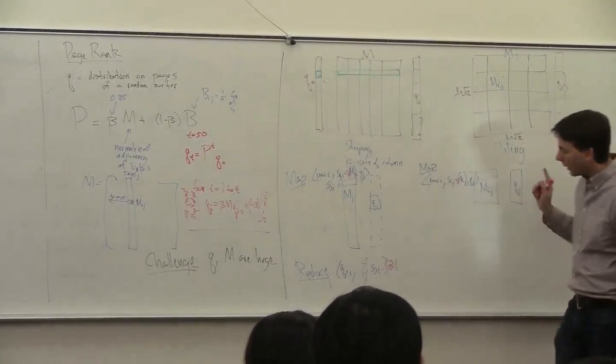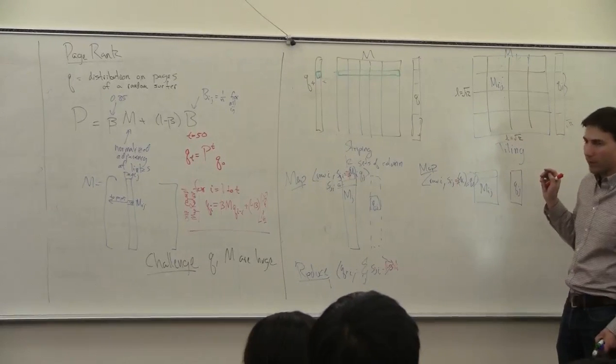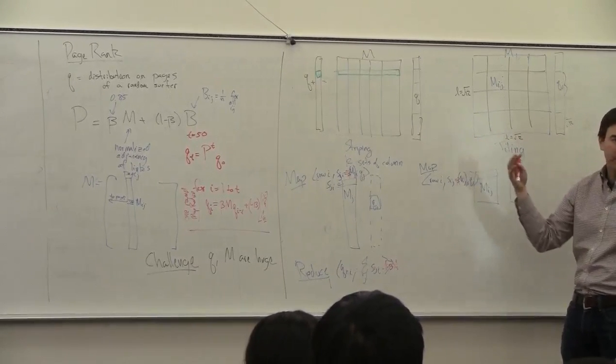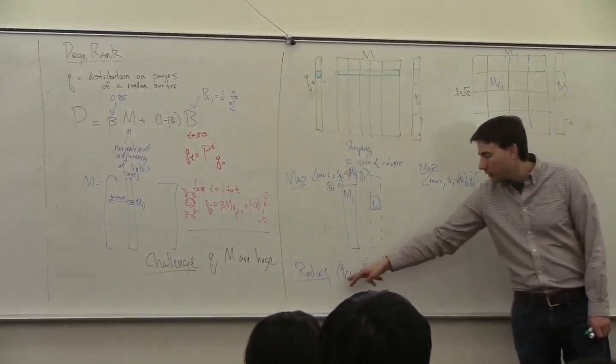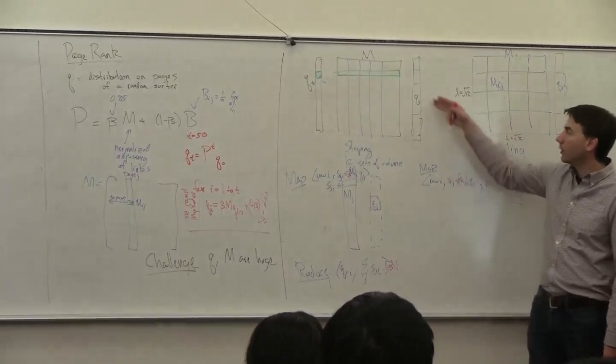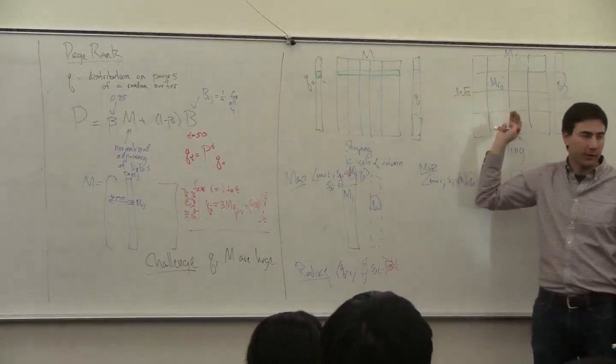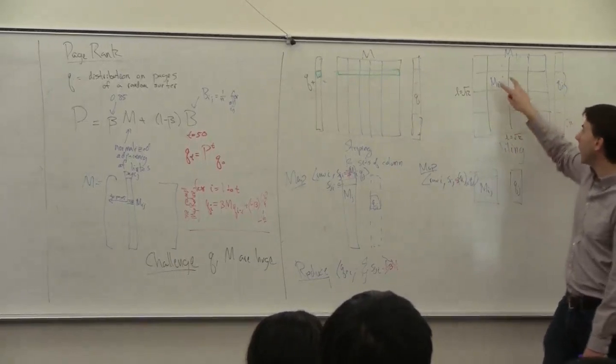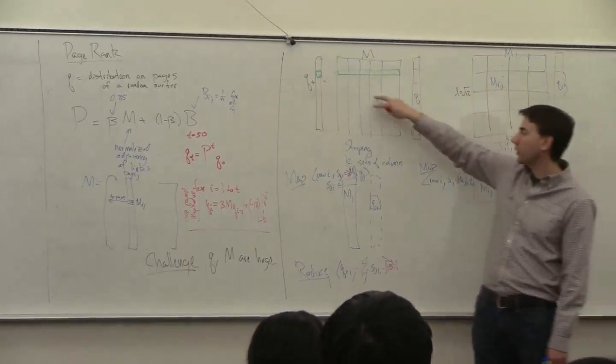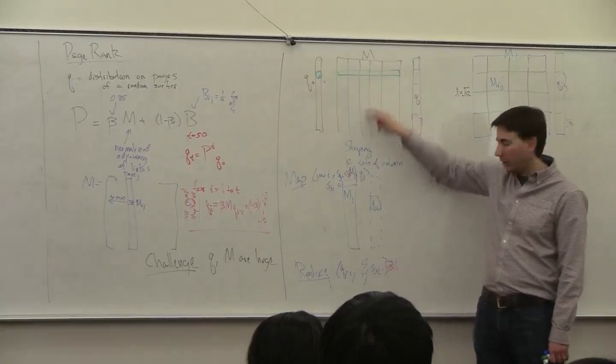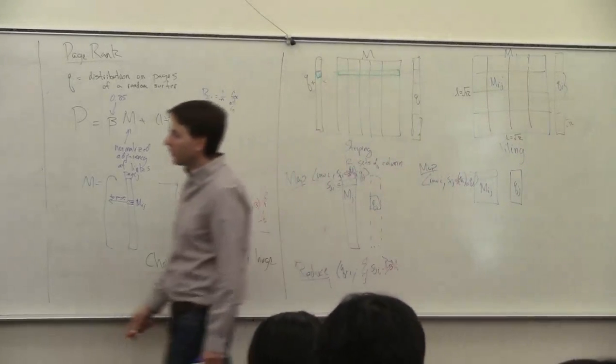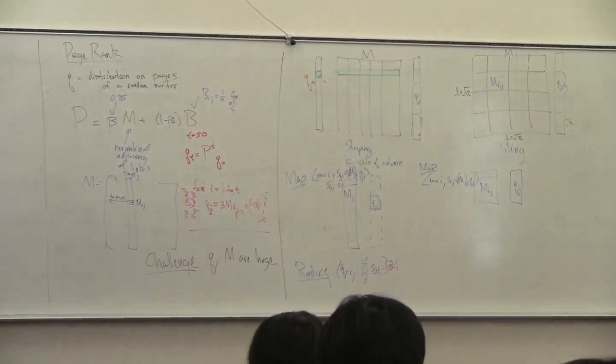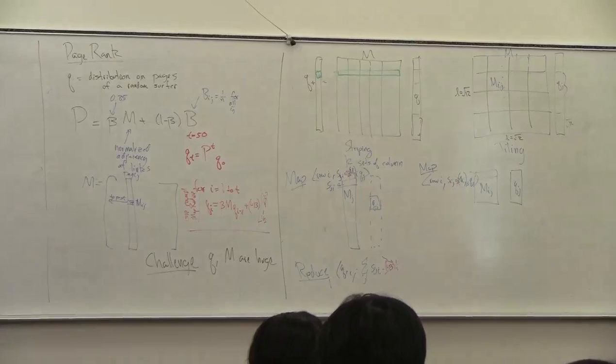And when the computer is deciding how to shuffle, the MapReduce system behind it is deciding how to shuffle, it can send all of these Q plus to the actual node where it's going to be used in the next round. So you don't have to move these M_{i,j}s or these M_j stripes in between rounds. You just need to move these pieces here. So this would be a pretty simple matrix.